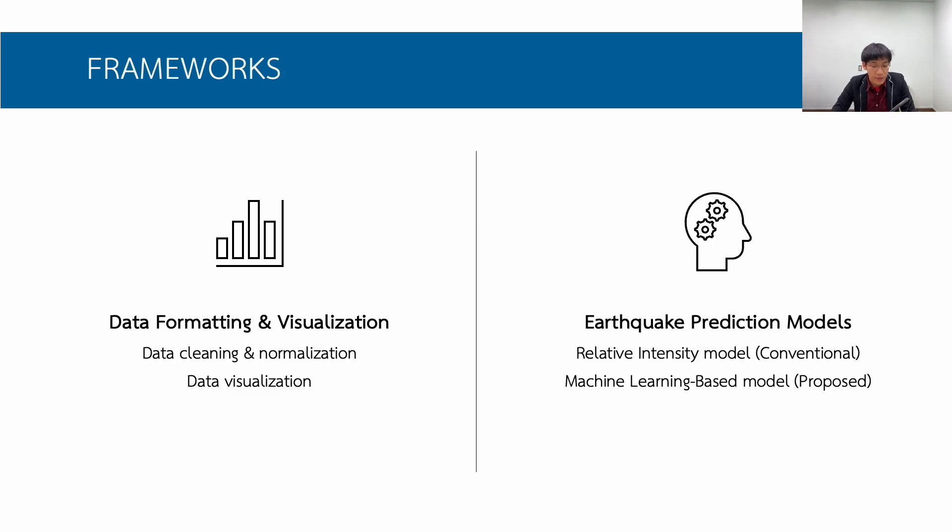Our frameworks: We first start by data formatting and visualization. We do data cleaning and normalization, and we also do data visualization. Then we move on to the next part, which is about earthquake prediction models. We use two of the models. The first one, conventional model, which is known as relative intensity model. And the next one is the one we study and proposed, which is machine learning-based models.